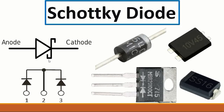Then we have the Schottky diode. Its symbol is like a normal diode but with a bent line. We have the anode and the cathode. You can find a Schottky diode with two, three, or four terminals. The Schottky diode is used for the output voltage in switch mode power supplies. Never replace a normal diode with a Schottky diode, because this is a very fast diode, different from a normal diode used in a bridge rectifier.